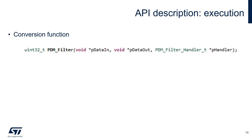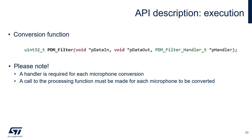A processing function is provided to be called when data to be converted is available. The parameters of this function are a pointer to the first byte of the PDM input, a pointer to the first sample to be written in the output buffer, and a handler for the specific microphone. Please note that a handler is required for each microphone conversion and a call to the processing function must be made for each microphone to be converted.